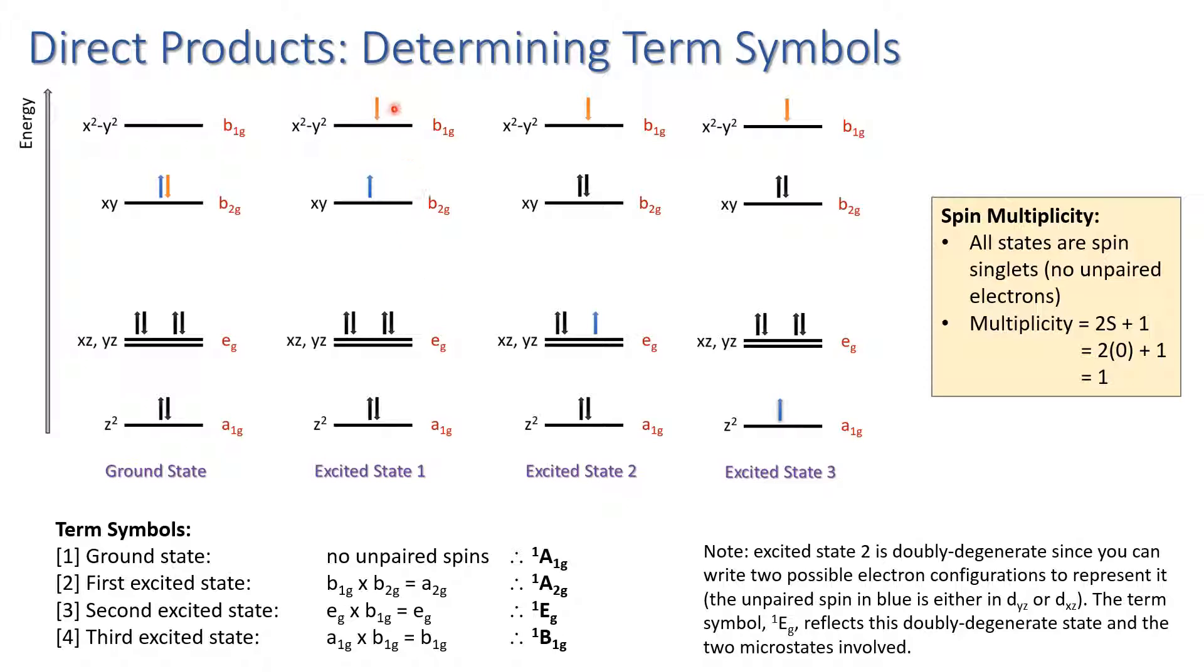Now let's look at the first excited state. We have a single electron in b2g, a single electron in b1g, and so we take the direct product b2g cross b1g. b2g cross b1g, it's commutative which means you can do it in either order, gives us a2g. So writing in capital symbols then to represent the spectroscopic term, we have singlet A2g for the very first excited state.